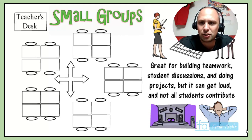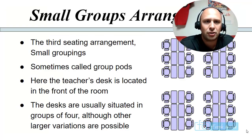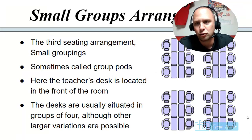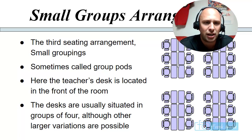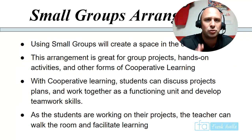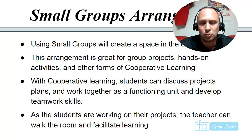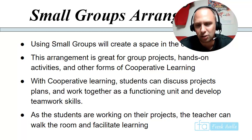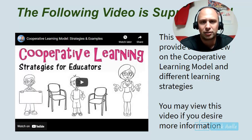Small groups are great for building teamwork, student discussions, and doing projects. But it can get a little loud, and not all students contribute in group work. This third seating arrangement is sometimes called group pods. Groups don't have to be four; they could be three, five, or six. The teacher's desk is located in front of the room, and desks are situated in groups of four with larger variations possible. Using small groups creates space in the classroom. This arrangement is great for projects, hands-on activities, and cooperative learning. Students can discuss project plans and develop teamwork skills, while the teacher walks the room to facilitate learning.